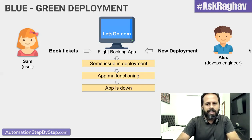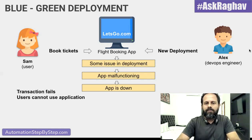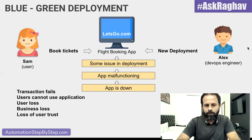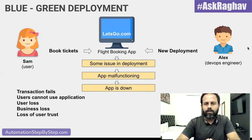On the user side, there is failure in transactions — the users cannot use the application because it is now down. There is user loss, business loss, and loss of trust, along with so many other issues caused by this downtime.